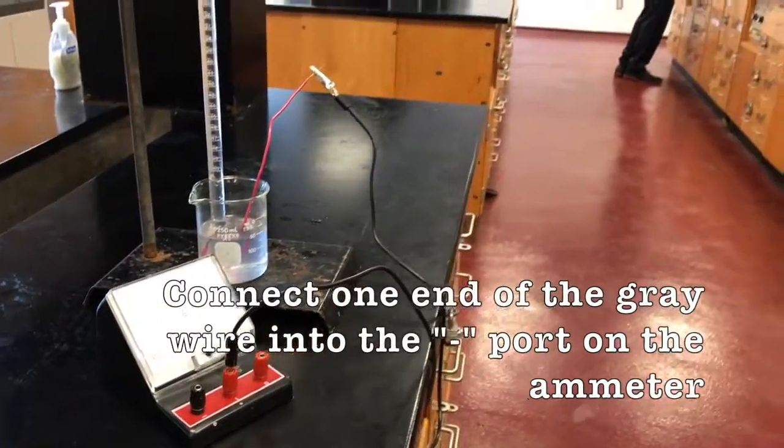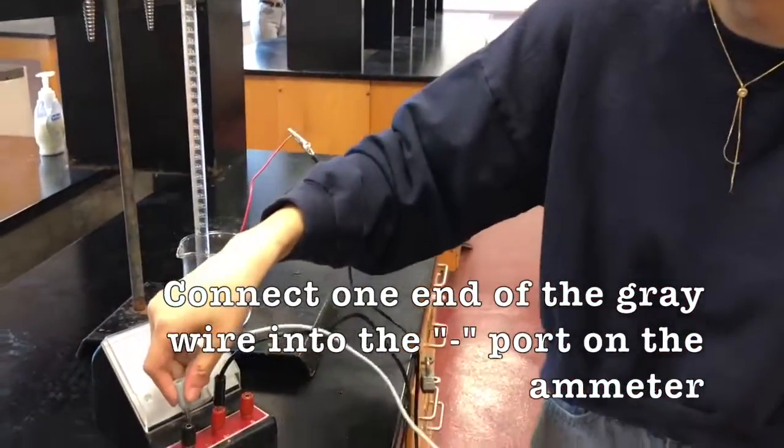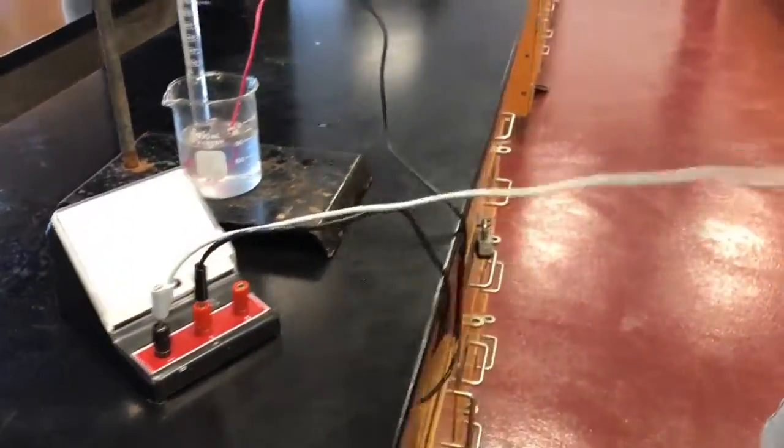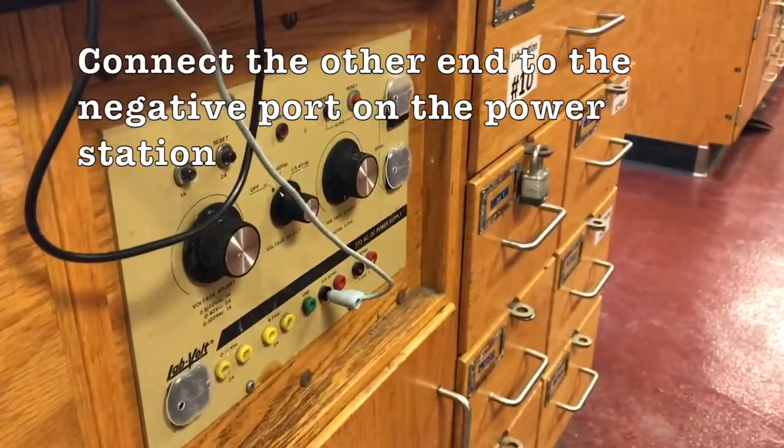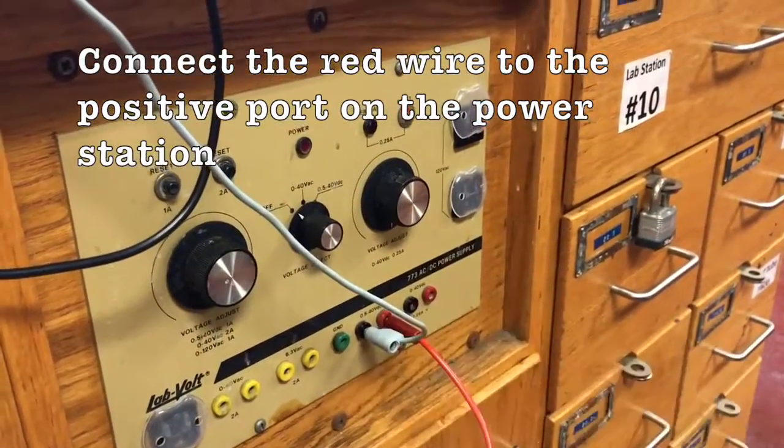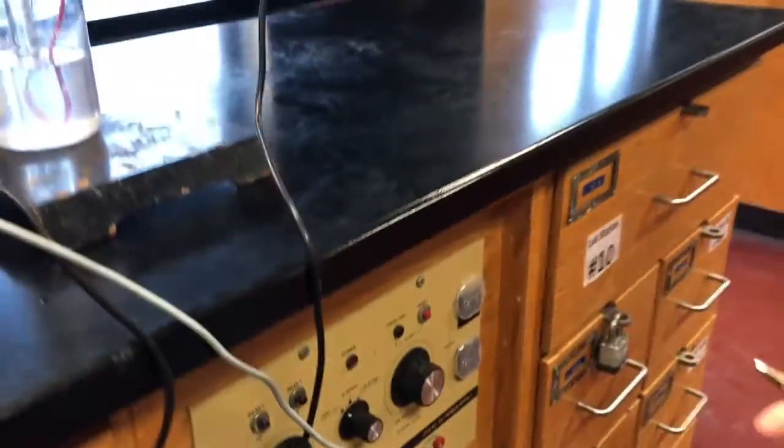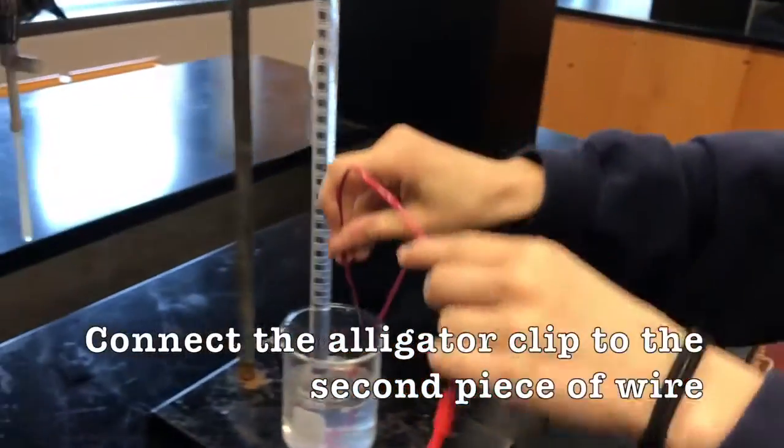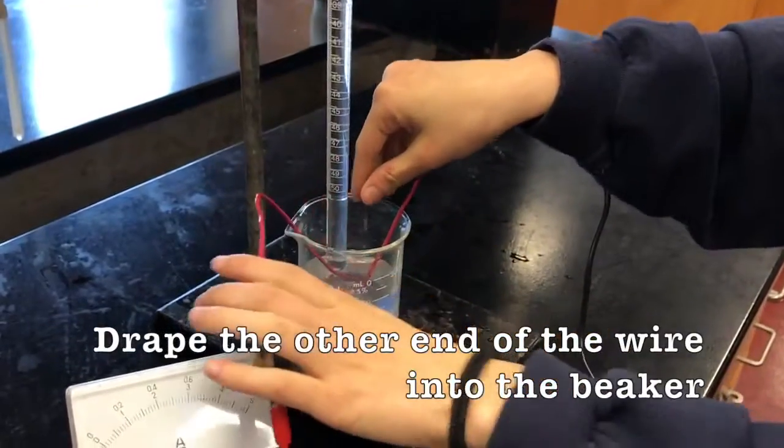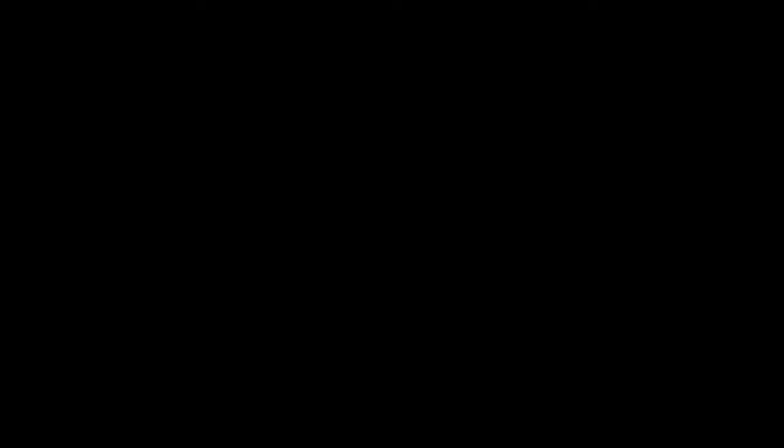Connect one end of the grey double banana plug wire into the negative port on the ammeter and connect its other end to the negative port on the power station. Connect the remaining red alligator clip wire to the positive port on the power station and connect its alligator clip to the second piece of stripped wire. Drape the other end of this copper wire into the beaker.